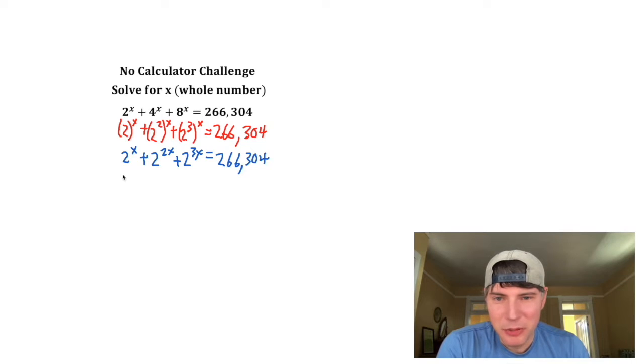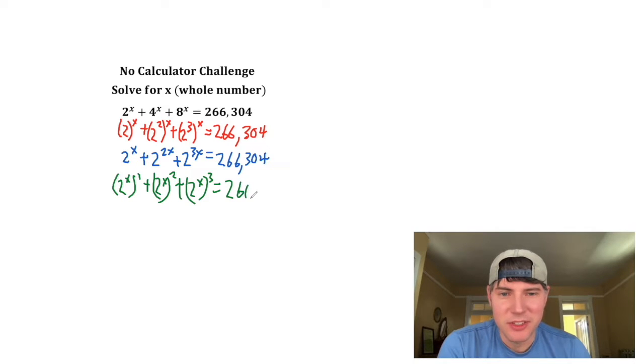Then I'm going to do a little bit of funny manipulation and put it in parentheses again. This will be 2 to the x to the 1 plus 2 to the x squared plus 2 to the x cubed equals 266,304.